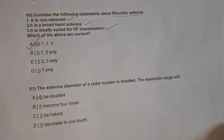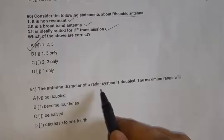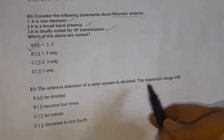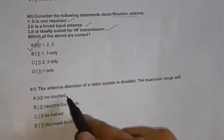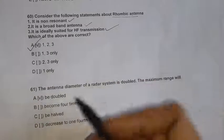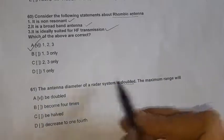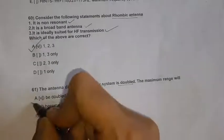Question 61: The antenna diameter of a radar system is doubled. What happens to the maximum range? Since antenna diameter is directly proportional to the range, whenever the antenna diameter is doubled, the maximum range also doubles. Option A, B — double — is the right option.